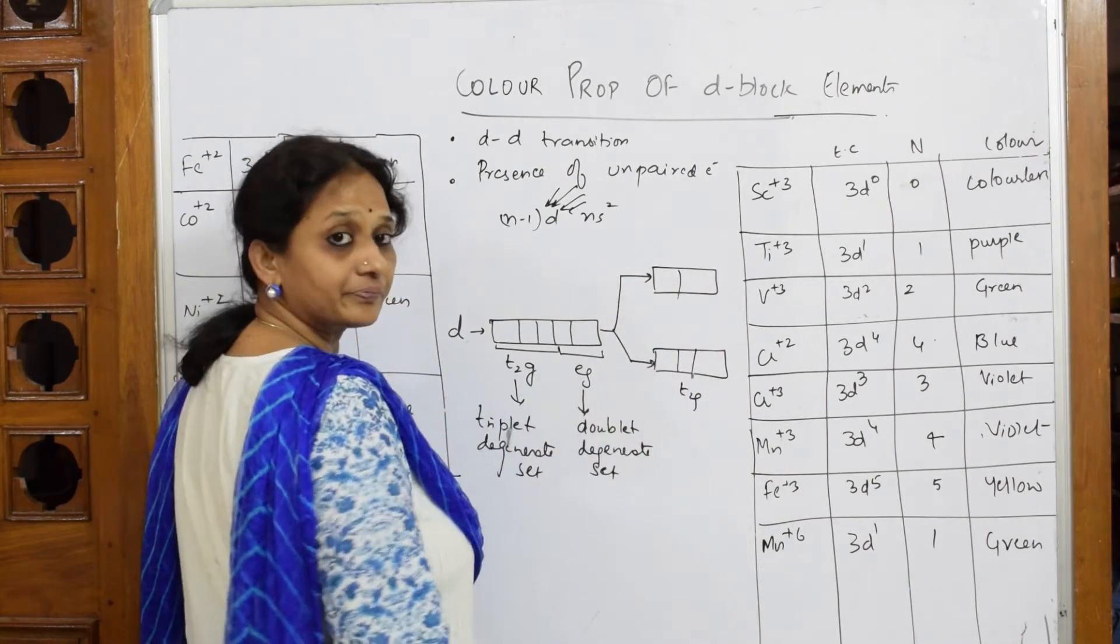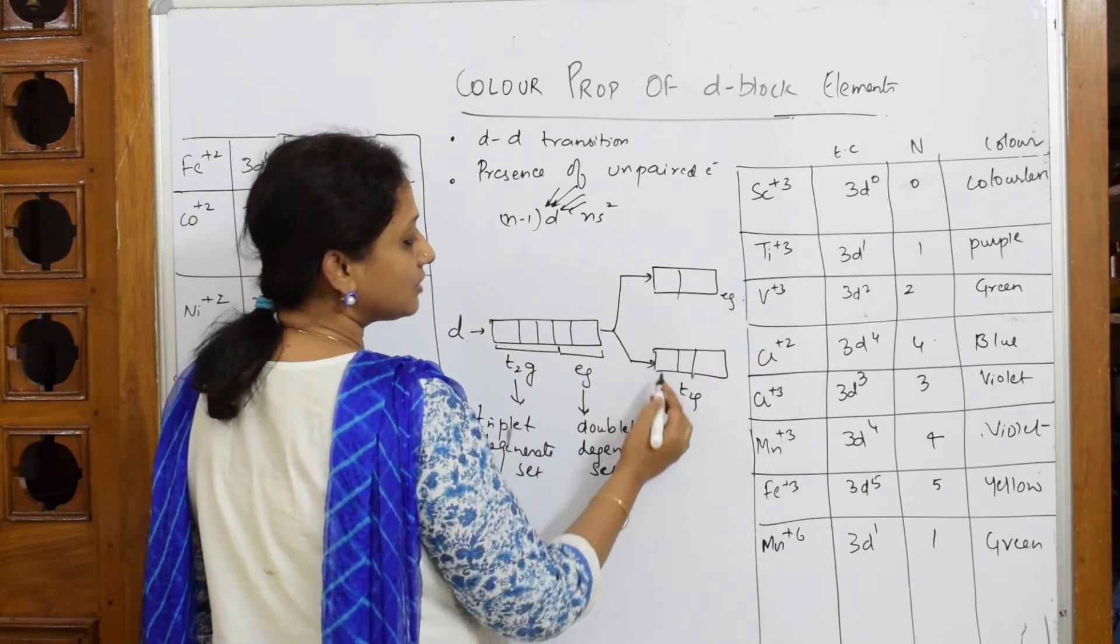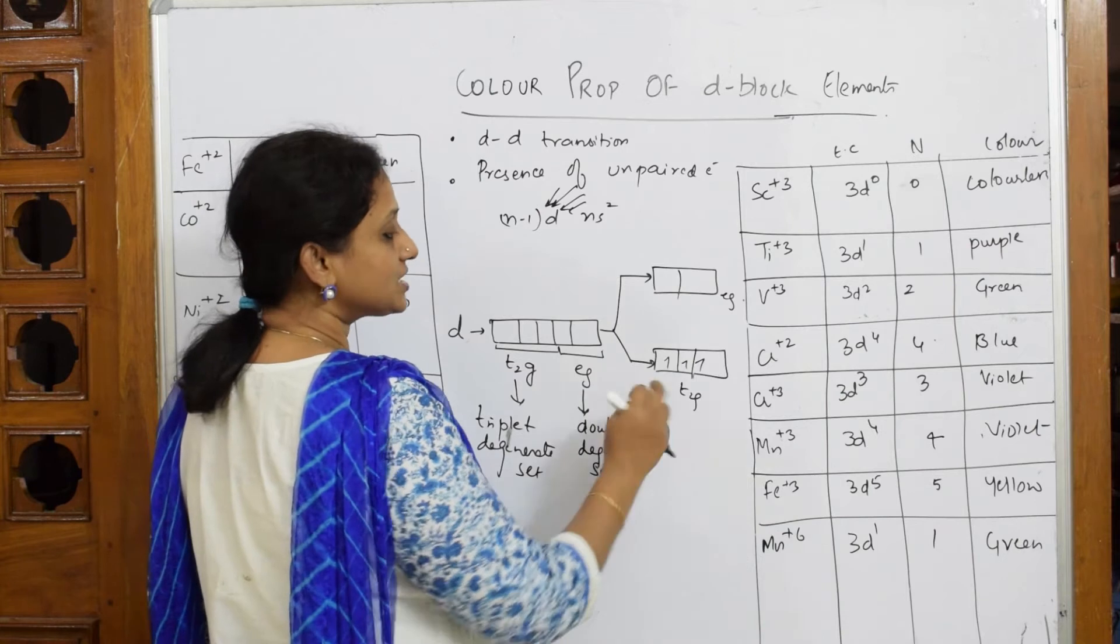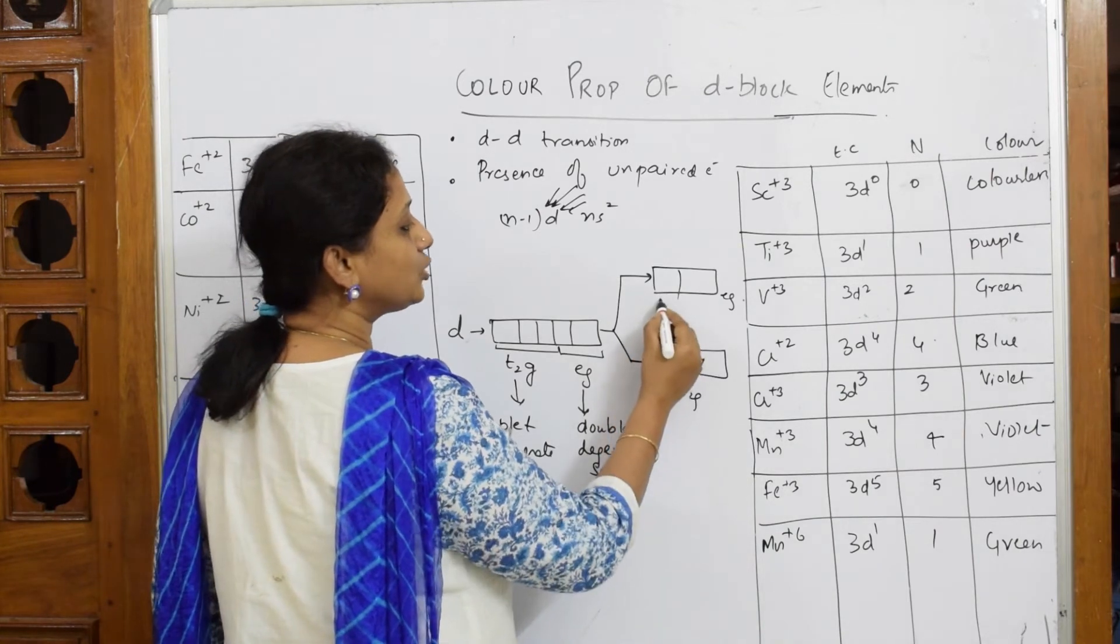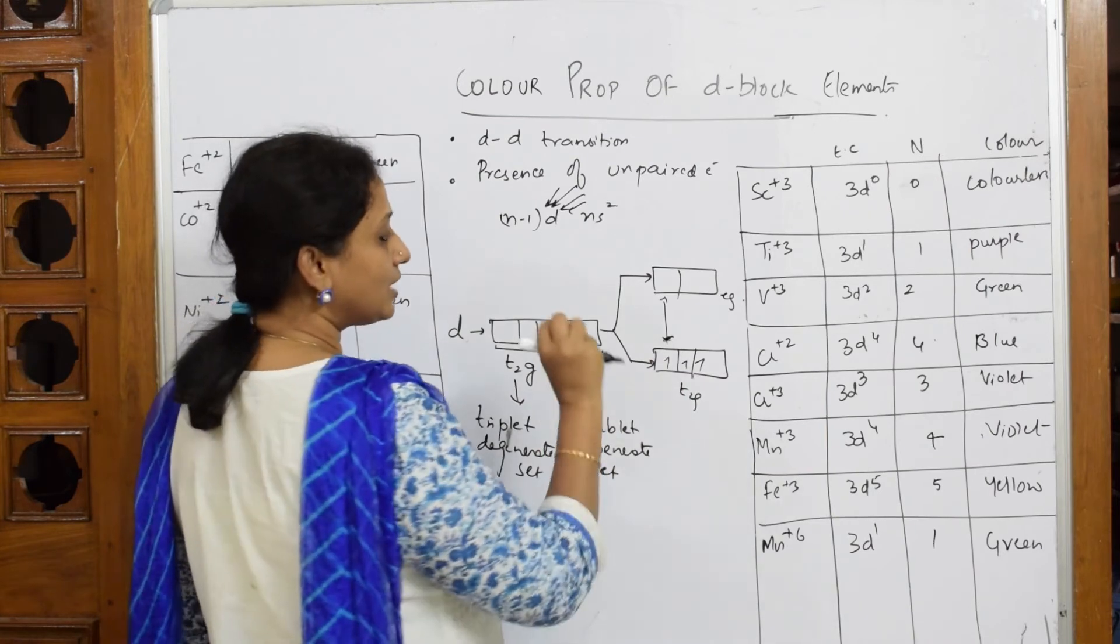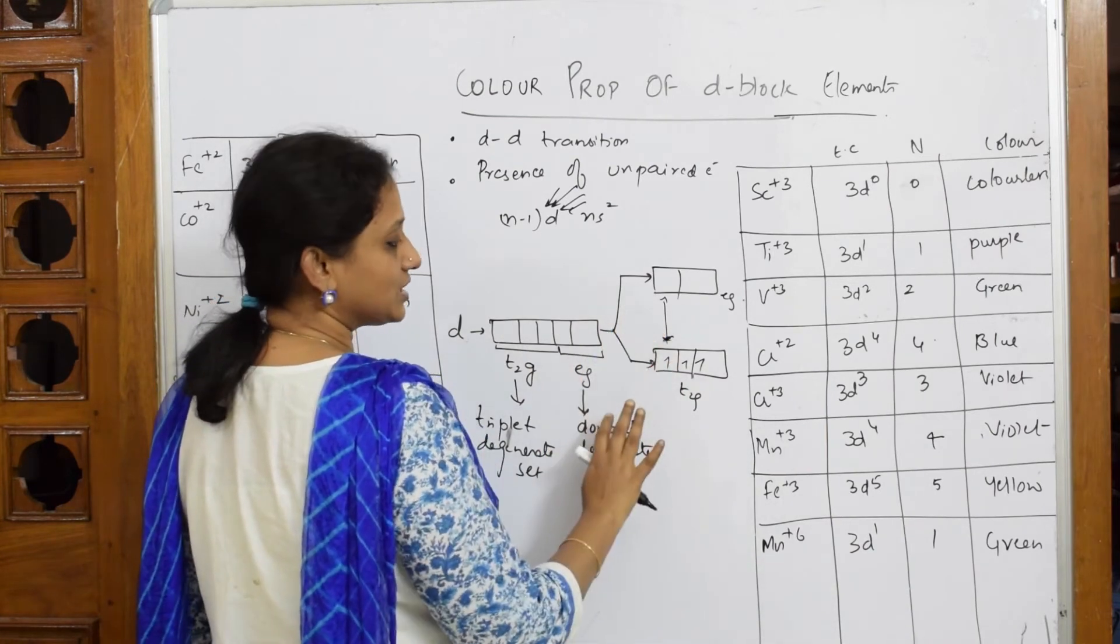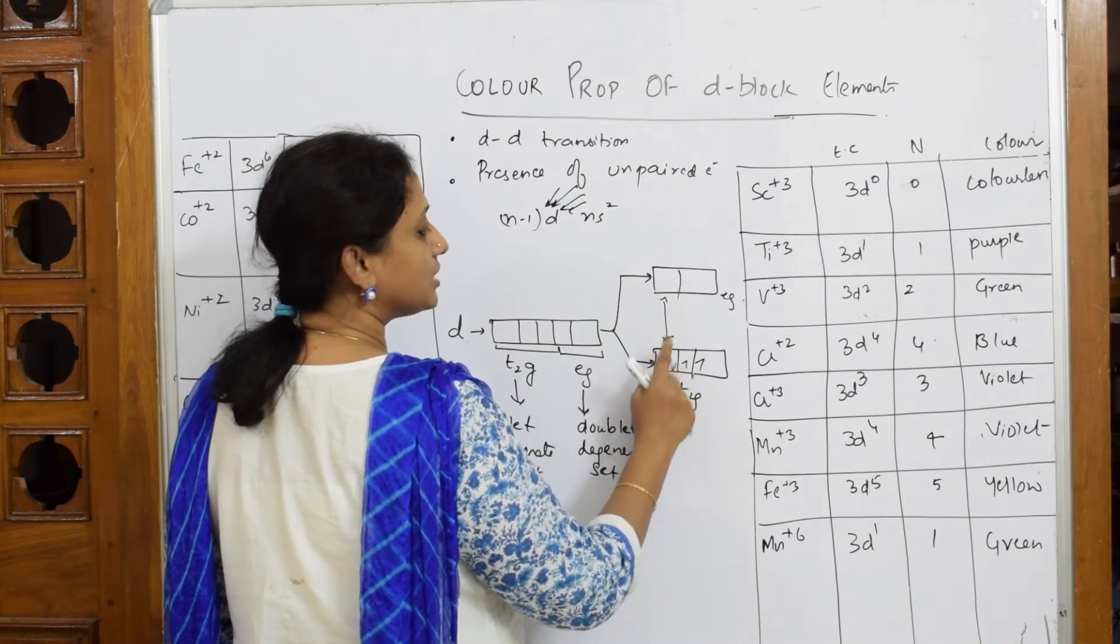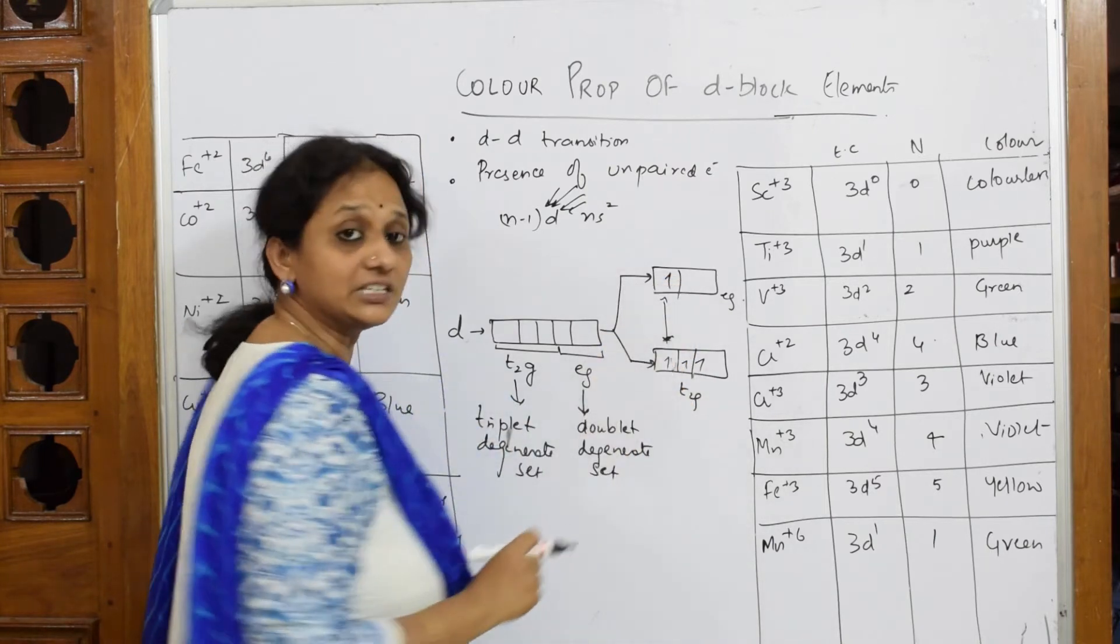When I said unpaired electron - the energy difference between t2g and eg is very less. So when a photon of light is exposed on this, the electron is going to get excited. One electron from here goes to the excited state of eg.